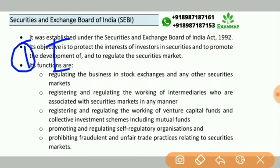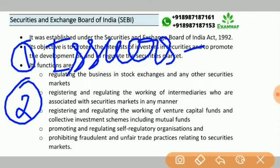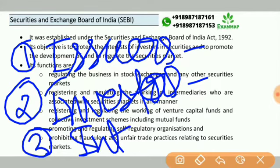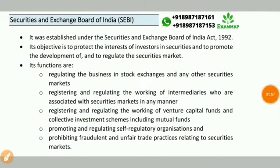The first category is issuers, by providing a marketplace in which the issuers can raise their finances. The second is investors, by ensuring safety and supply of precise and accurate information. The third is intermediaries, by enabling a competitive and professional market for intermediaries. These are the three I's.